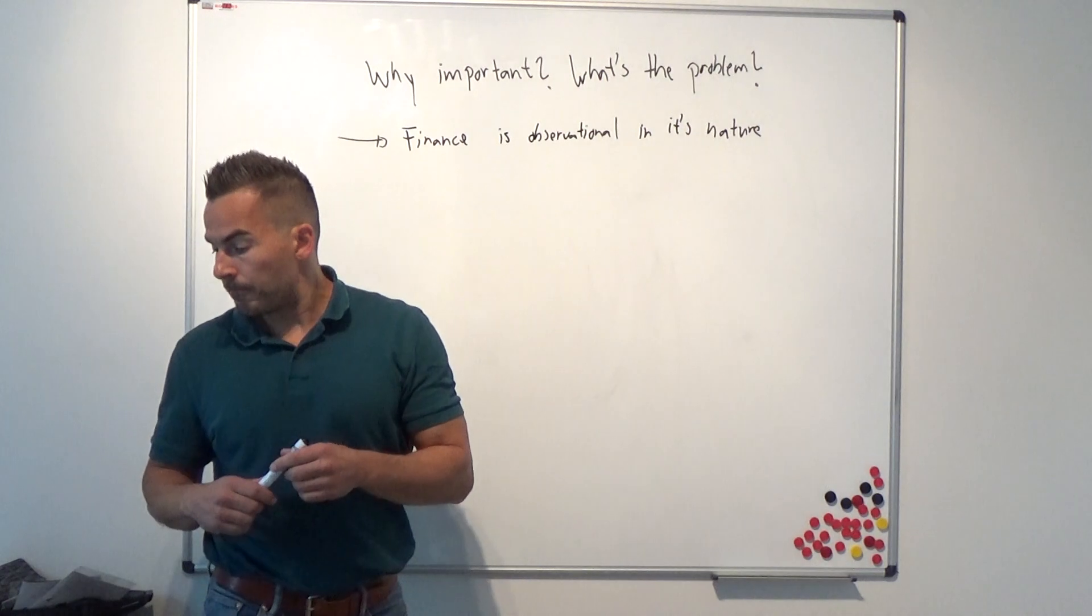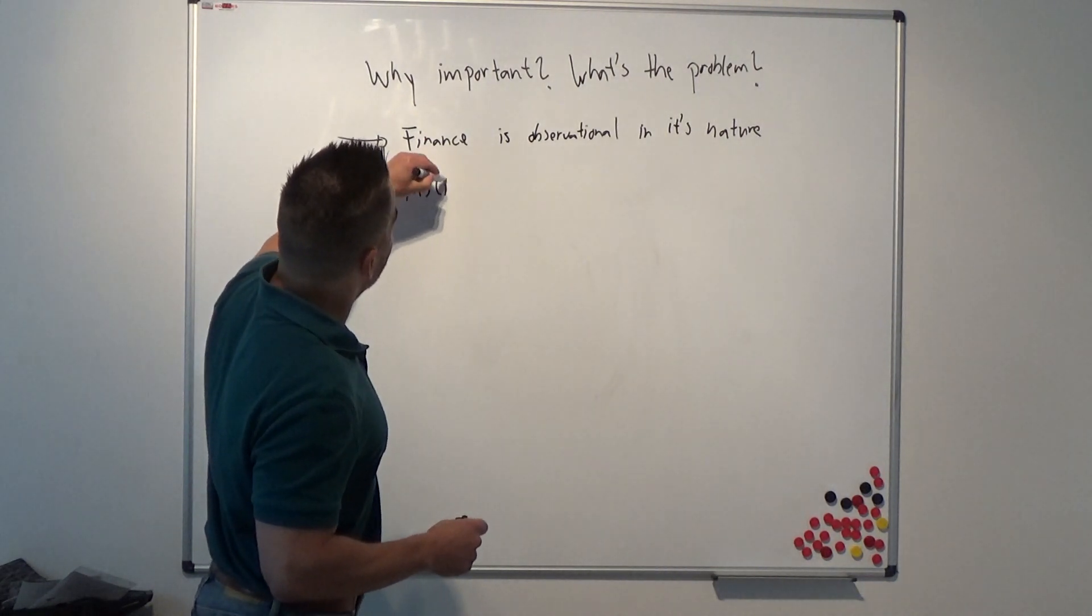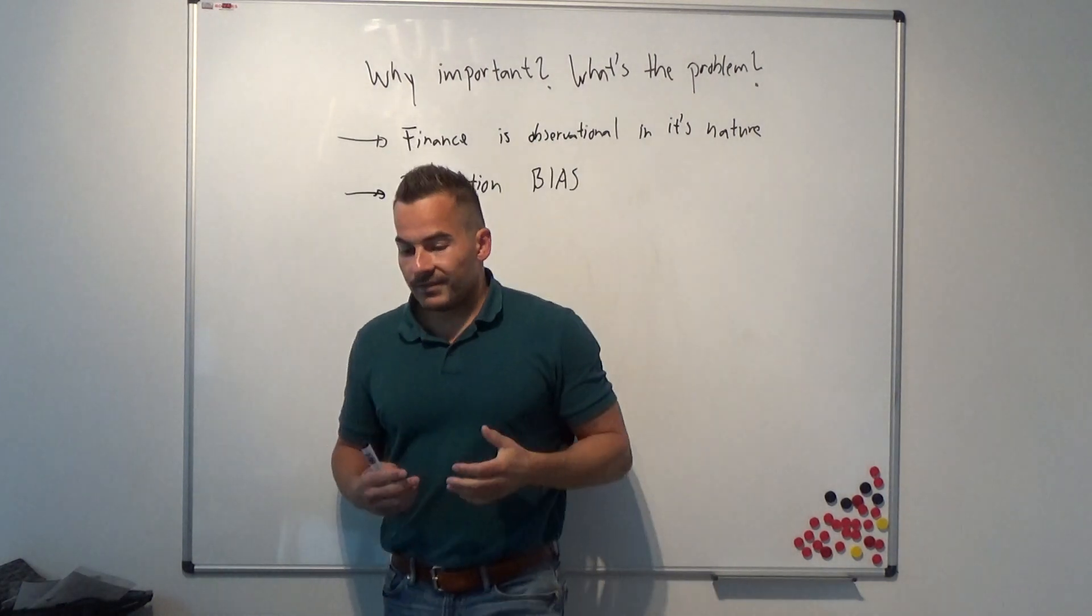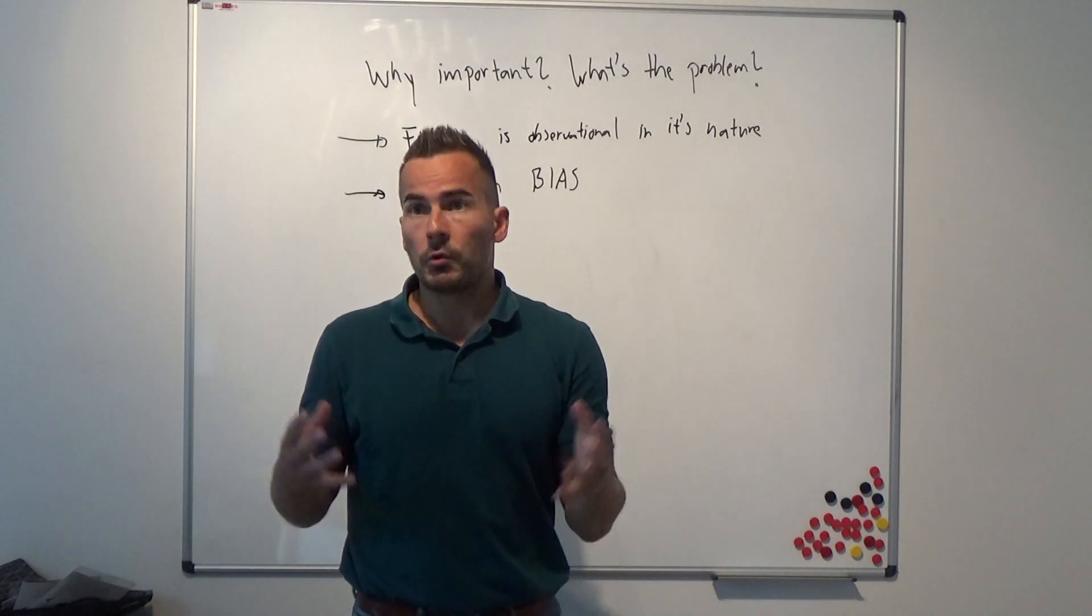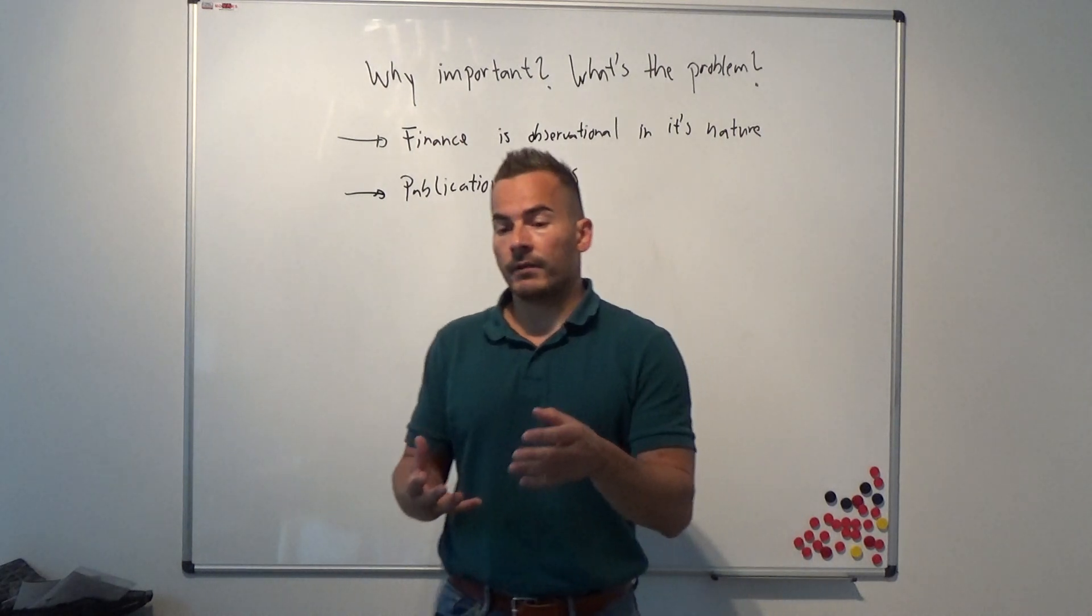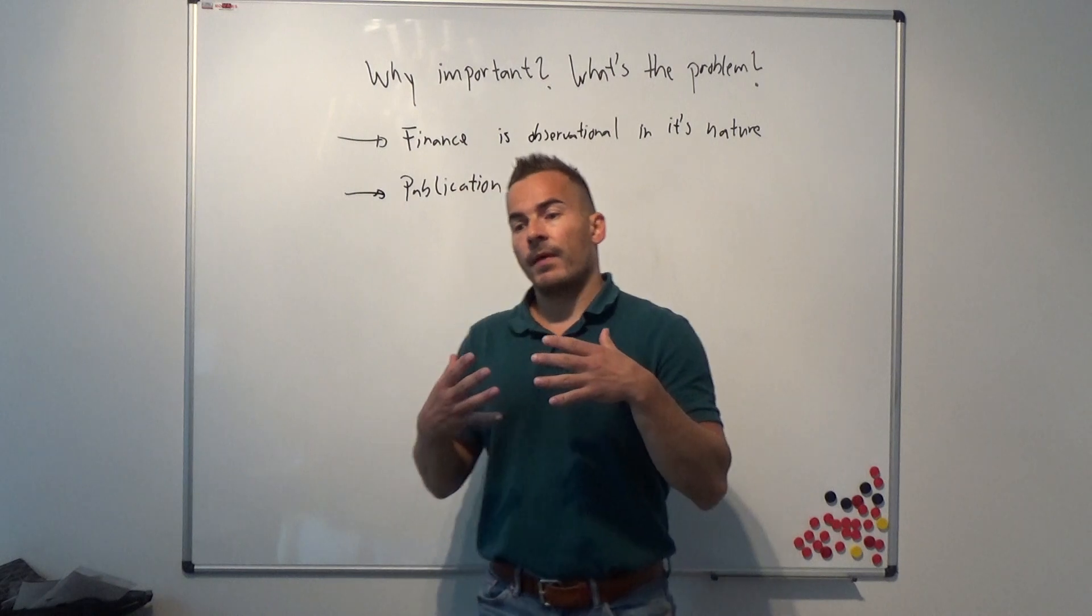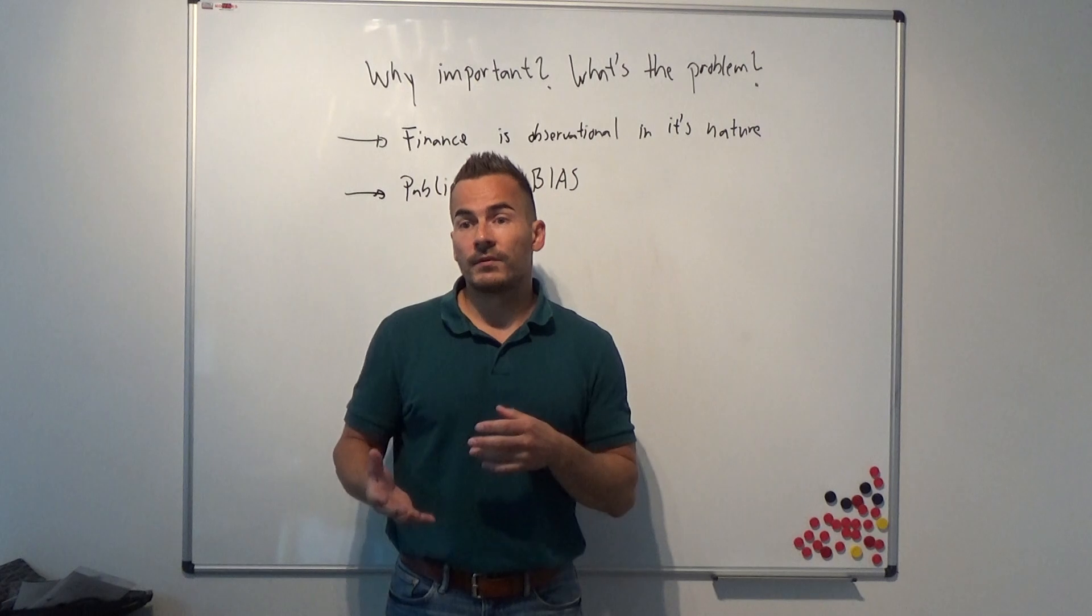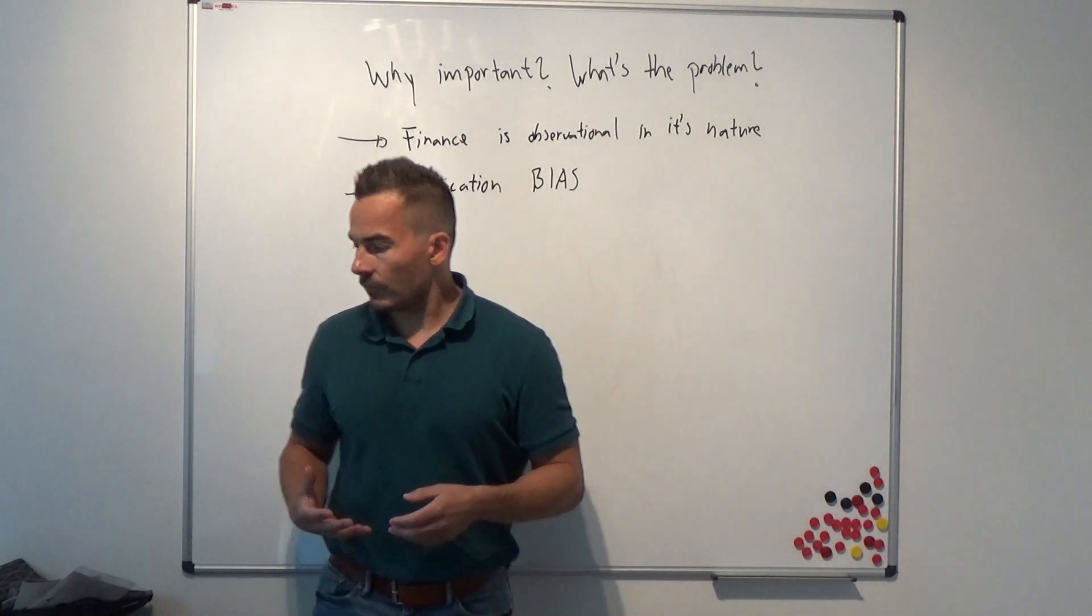Another issue is that we have a publication bias. What does that mean? It means basically, and this is also what they write in the paper, that editors from top journals, or from journals in finance in general, they tend to publish papers that have some result, some, let's say, positive result. They find some certain patterns in stock returns, or commodity returns, or any other asset returns. Because they are more likely to get citations and they are more likely to be read from other scholars. Obviously, editors from top journals, they would rather choose a study to publish in a journal that has some sort of result.